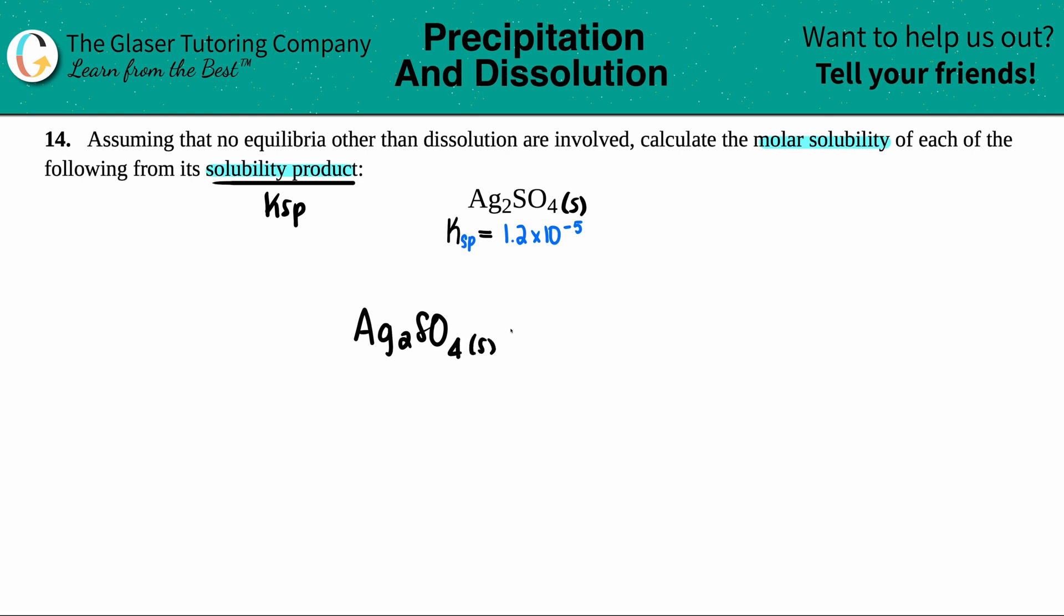So we have Ag2SO4, that's a solid, goes into equilibrium because we're dealing with K values. Well, where's the break? Well, I've seen SO4 time and time again throughout this whole chemistry course, right? So polyatomics always stick together. So the break has to be between the silver and the SO4.